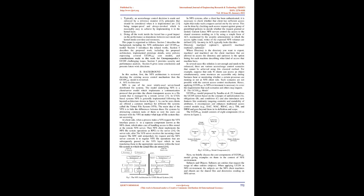This paper is organized as follows. Section 2 describes the background, including the NFS architecture and the UConABC model. Section 3 introduces the related works. Section 4 describes the proposed work, including the proposed architecture, implemented prototype details, some policies expressing covered UConABC core models, and considerations made for Grampinopoulos' UCon challenging issues. Section 5 provides security and performance analysis. Section 6 gives conclusions and presents future work directions.